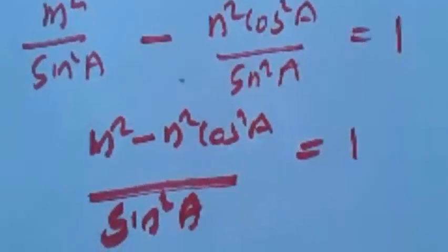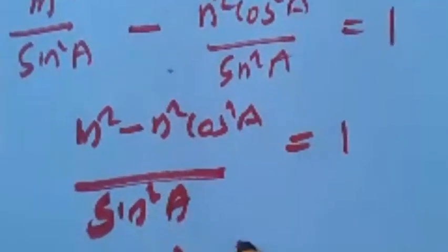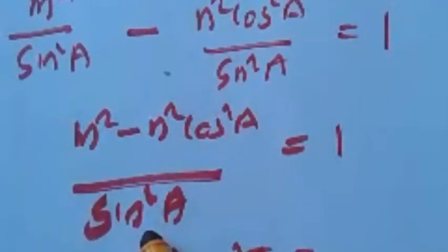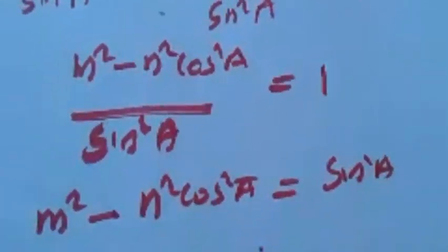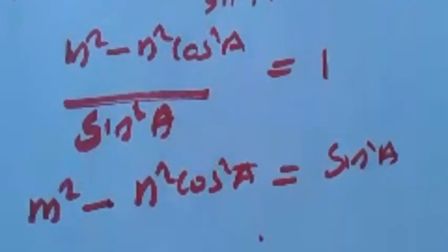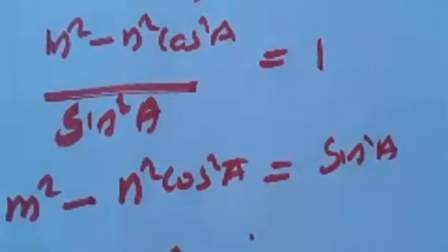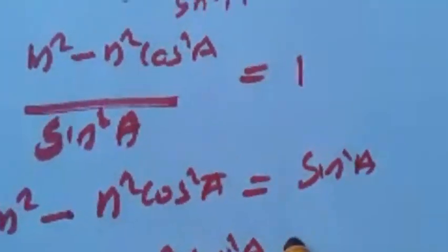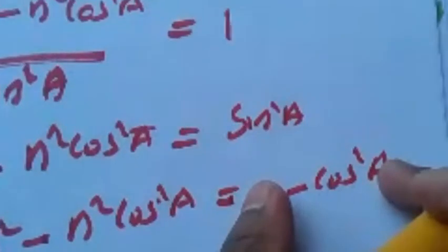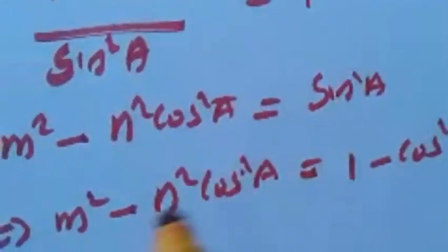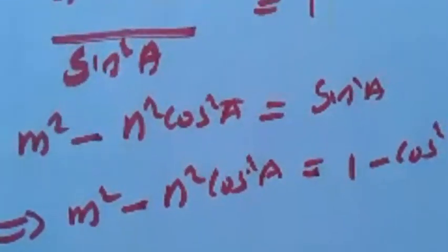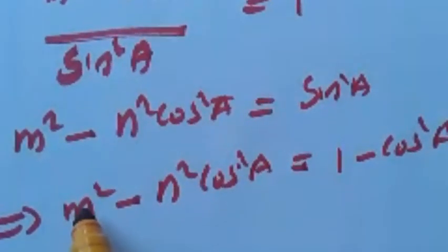When you take sin²A to the right side, it becomes m² - n²cos²A = sin²A. We can replace sin²A as 1 - cos²A. We are replacing it like that because we need the proof in terms of cos²A. So: m² - n²cos²A = 1 - cos²A.